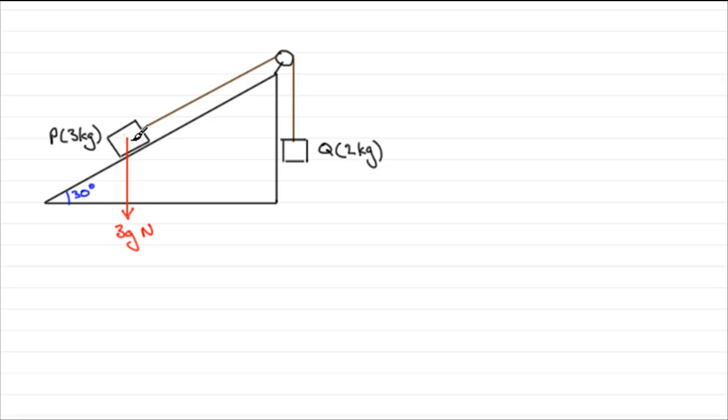What else would there be acting on P? Well it's resting on a smooth surface so there's going to be a normal contact force which I'm going to call the reaction. We'll call it R and that'll be R newtons. There'll be tension, wanting to pull the particle P up the slope. So we'll mark that in. Tension T. So we'll call that T newtons. So there are all the forces acting on P. There's no friction because the plane is smooth.